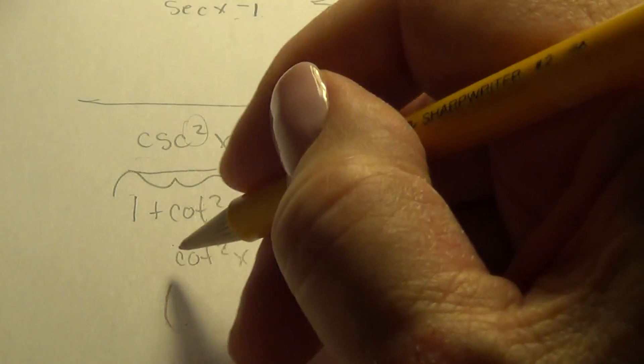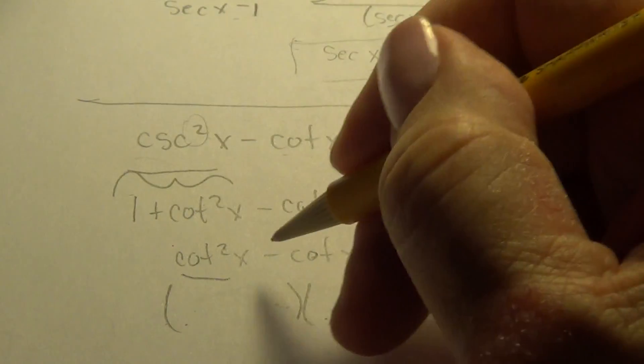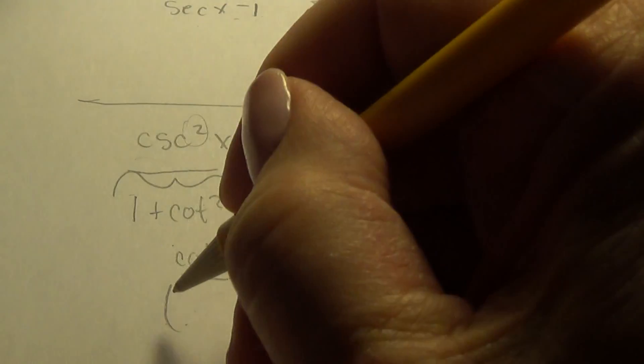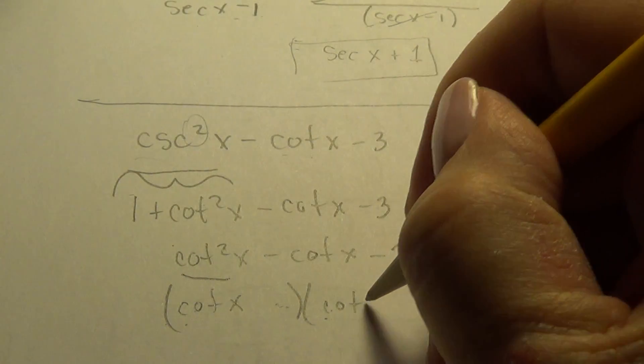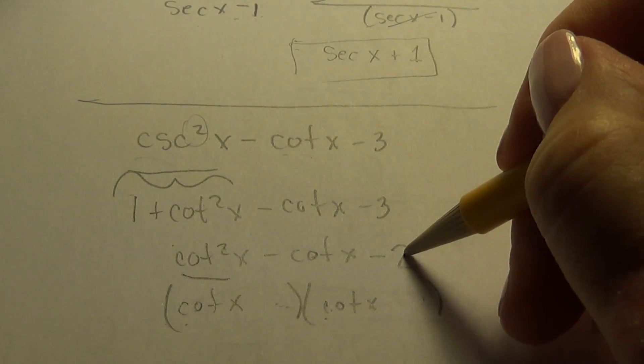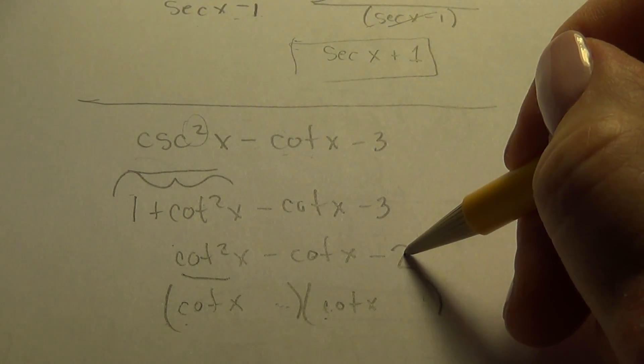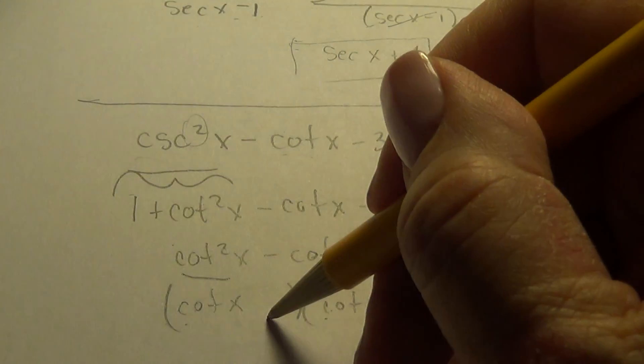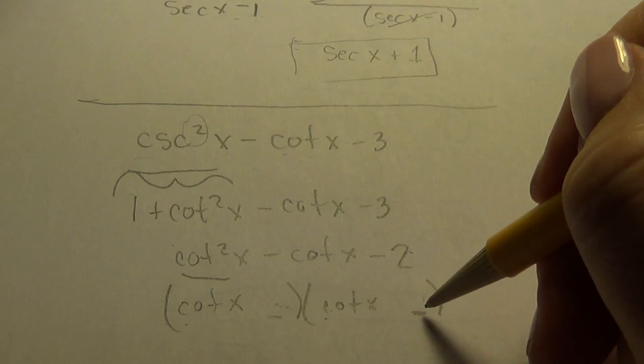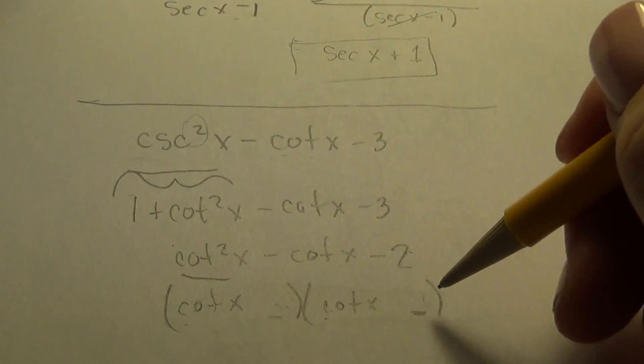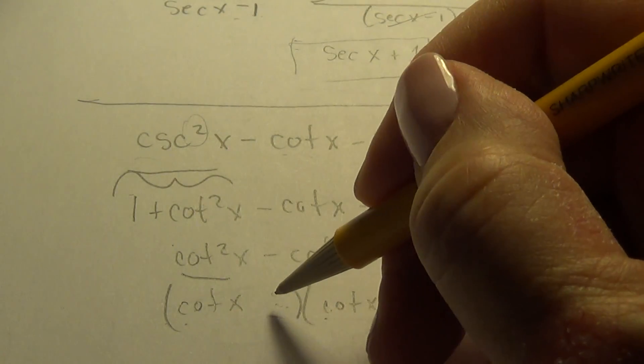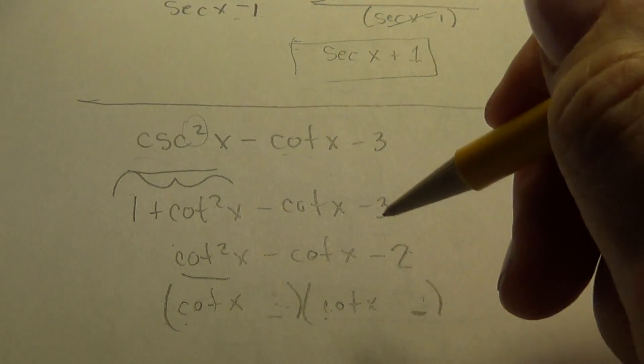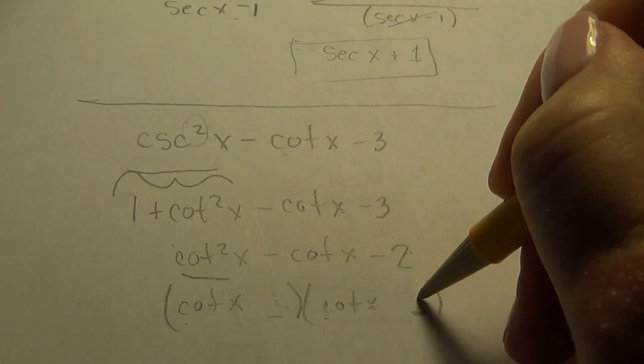So I know if the first times the first gives me cotangent, it's going to have to be cotangent x cotangent x. And there's not a whole lot of choices, but there are some. So to get minus two, what times what will give us minus two? Well, we can have a two, a plus two, and a minus one. Or a minus one and a plus two.